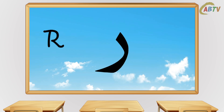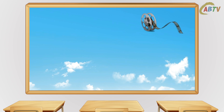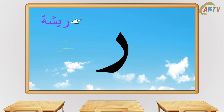Ra is sort of like the English letter R but with a bit of a roll of the tongue. For example, the R in 'rolling' or the word 'raw' are similar but not exact. This is what Ra looks like at the beginning, like this in the middle, and like this at the end of a word.